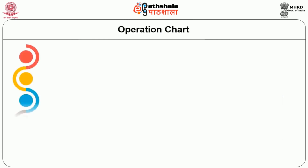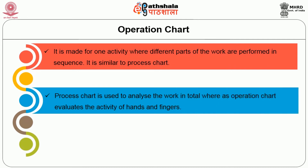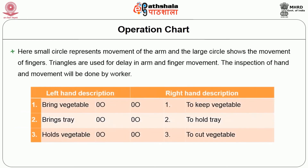Operation chart: It is made for one activity where different parts of the work are performed in sequence. It is similar to a process chart, but while the process chart is used to analyze the work in total, the operation chart evaluates the activity of hands and fingers — the minute and fine motor skills. In the left-hand description, bringing the vegetables is denoted by a small circle, 'O', and an inverted triangle. In the right-hand description, keeping vegetables uses the same symbols. A small circle represents movement of the arm, a large circle shows movement of fingers, and triangles are used for delay in arm and finger movement.